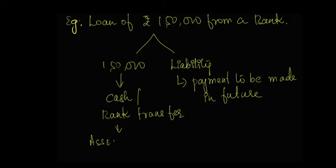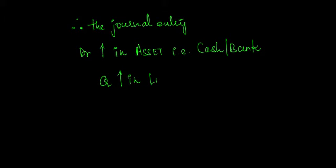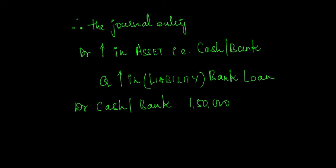The liability rule says, if there is any increase in the liability, the same shall be credited. In this case, the moment we obtain a loan from the bank by receiving rupees 1,50,000, there arises a new liability wherein we have to, at some point of time in the future, make the payment to the bank. Therefore, the journal entry in this case would be: debit cash, that is increase in asset, and credit bank loan, which is increase in liability.